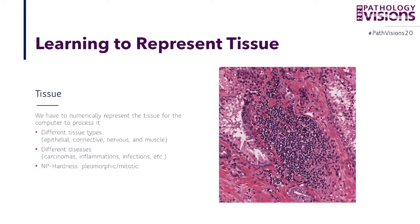We know that based on the textbooks we have different types of tissue: epithelial, connective, nervous, muscle. But we also know that we have many different diseases — carcinomas, inflammations, infections, and so on. The challenge is the diversity and variety of this: many are polymorphic, we have mitosis, and the manifestation across body parts and different sites will appear differently under a microscope or digital scanner.